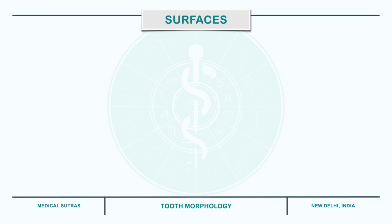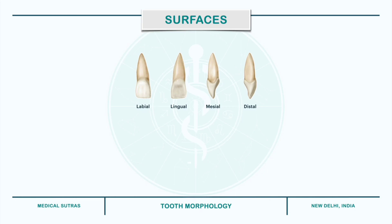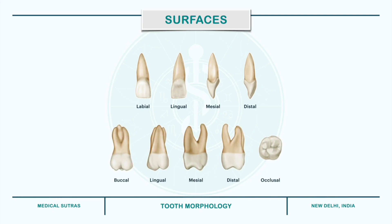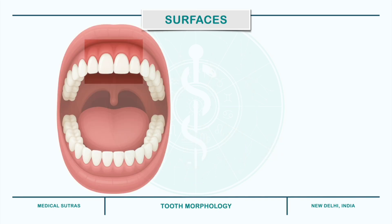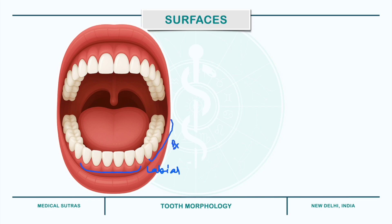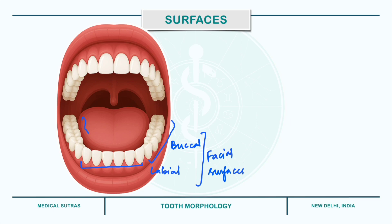Coming to the surfaces of teeth: the crowns of incisors and canines have four surfaces and a ridge, while the crowns of posterior teeth — that is premolars and molars — have five surfaces. In incisors and canines, the surfaces towards the lips are known as the labial surface, while in premolars and molars these correspond to the buccal surface as they face towards the cheek. These two surfaces are collectively called facial surfaces. All surfaces facing towards the tongue are referred to as lingual surfaces, and are also called palatal surfaces in the case of upper teeth.